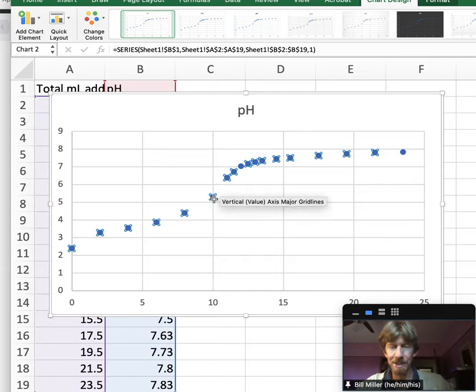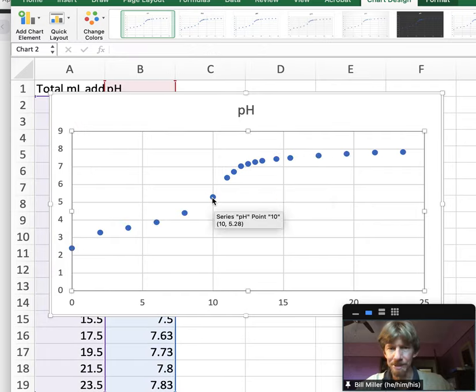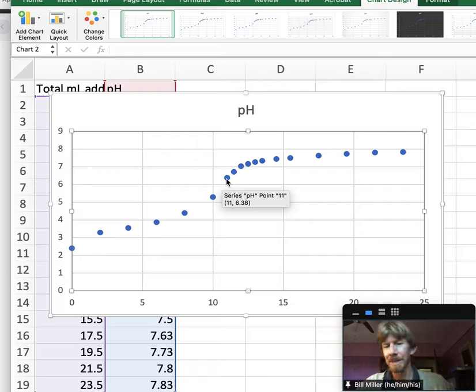So I'm going to take this point, which is 10, and this point, which is 11. I'm going to guess that my equivalence point is 10.5 milliliters because this is the steepest part.